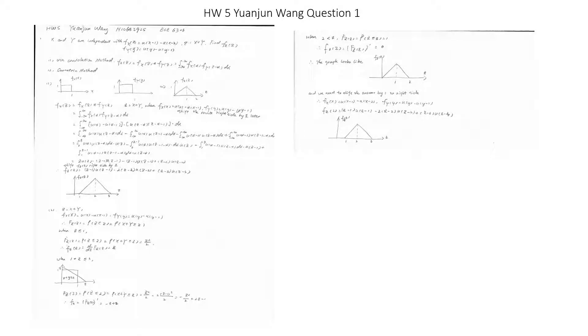Homework 5, Question 1. When x and y are independent with fx(x) = u(x-1) - u(x-2) and fy(y) = u(y) - u(y-1), and z = x+1, find fz(z).